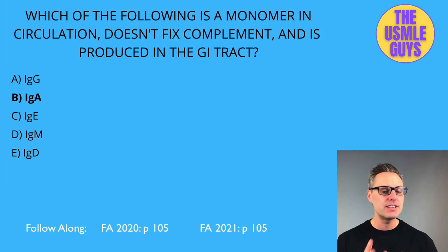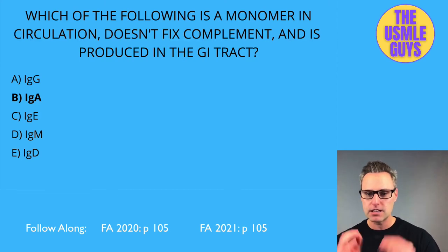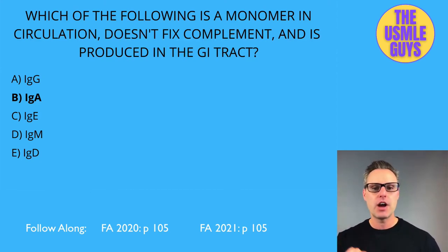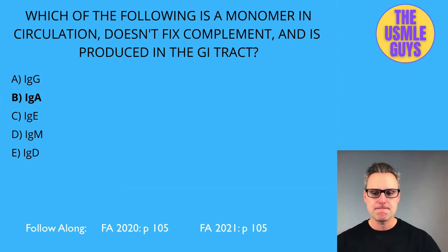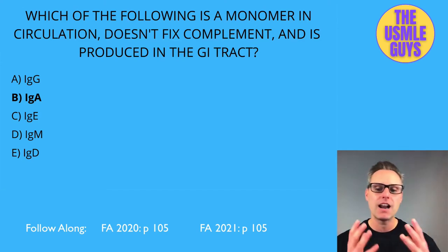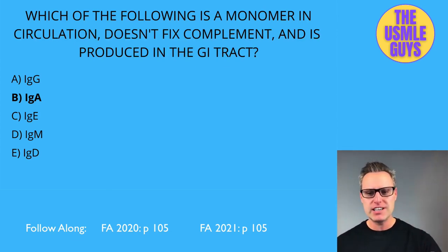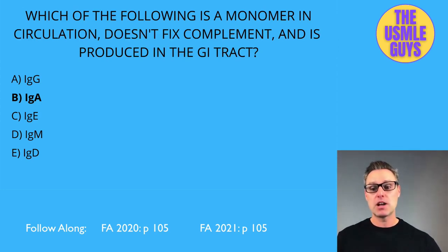IgA is found in mucous membranes and prevents the attachment of viruses and bacteria there. Unlike IgG, IgA does not fix complement. In circulation, IgA is a monomer, but when secreted it contains a J-chain and becomes a dimer. IgA is produced in the GI tract by Peyer's patches and is important in protection against gut infections. Notably, IgA is the most abundantly produced immunoglobulin, though it has lower serum concentrations than IgG.